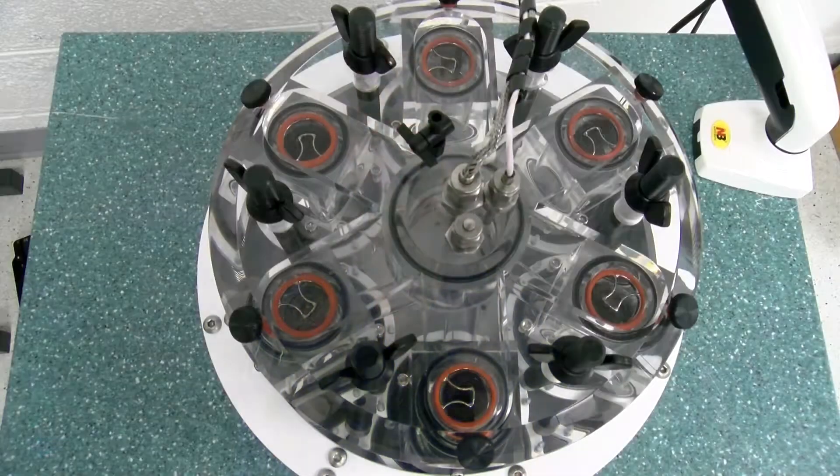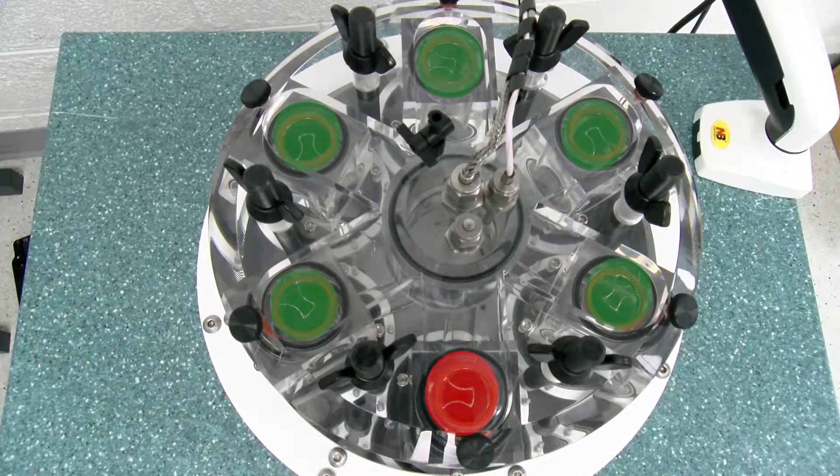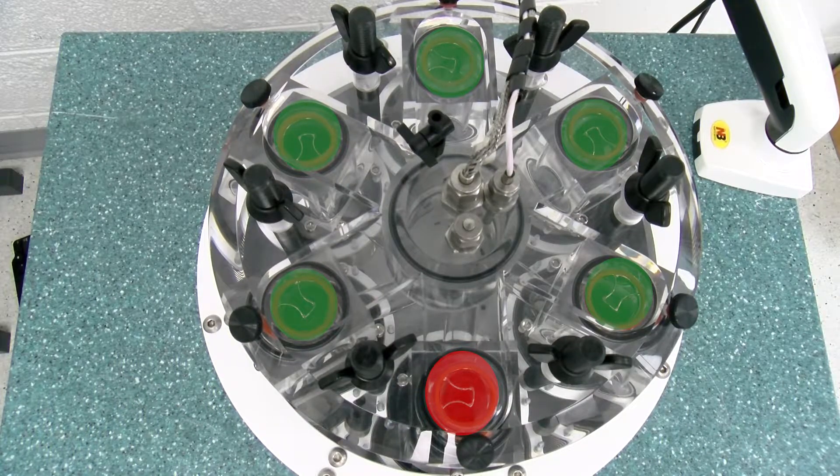The test chambers are pressurized sequentially, meaning the failure of a heart valve in one chamber does not result in significant pressure fluctuations for the remaining test chambers.